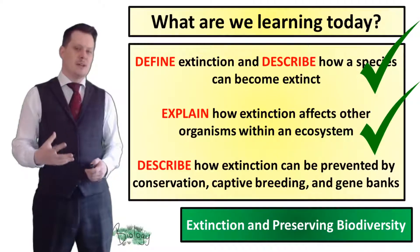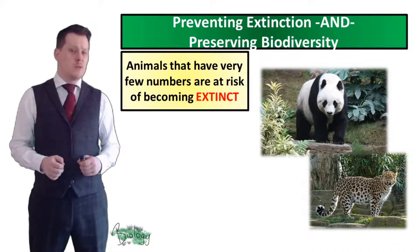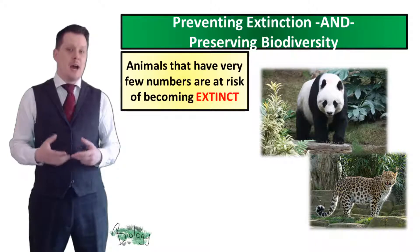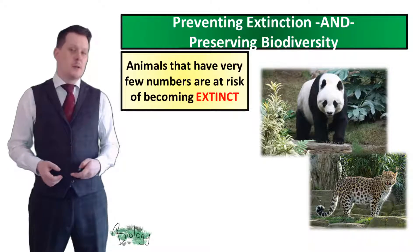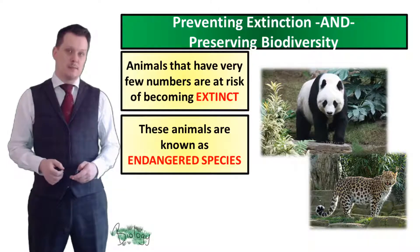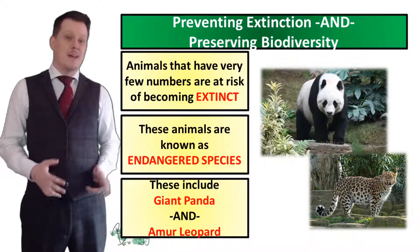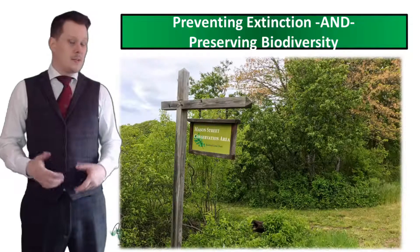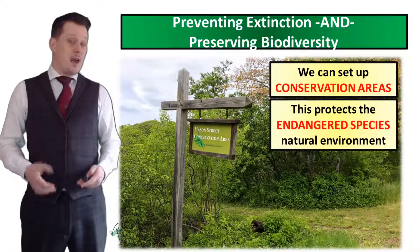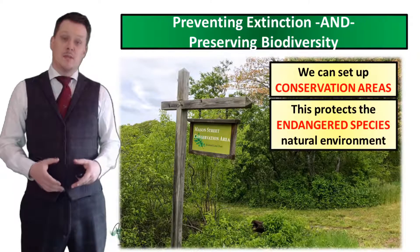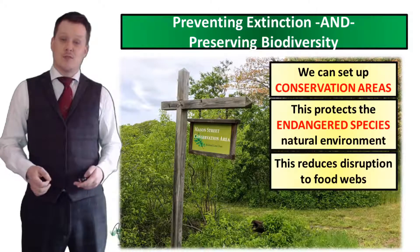We can take measures to prevent extinction by monitoring species, and when their numbers become really low we can declare them at risk — these are called endangered species. Included in endangered species are the giant panda and the amur leopard. To help protect endangered species we can set up conservation areas, which protect the species' natural environment, resulting in less disruption to their food web.